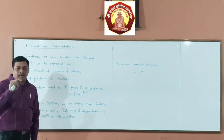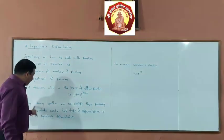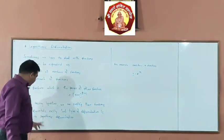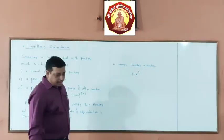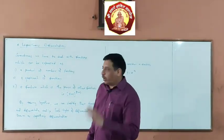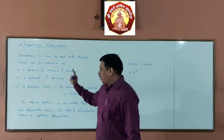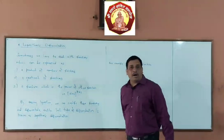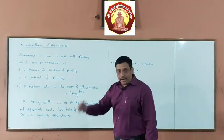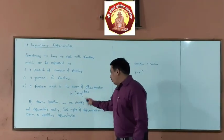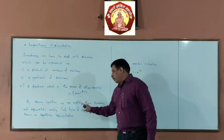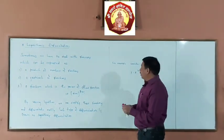By taking logarithm on both sides, we can simplify the function and differentiate easily. Such type of differentiation is known as logarithmic differentiation. We use it when the function is a product of functions, a quotient of functions, or when the base and index are both functions of x — i.e., f(x) to the power g(x).